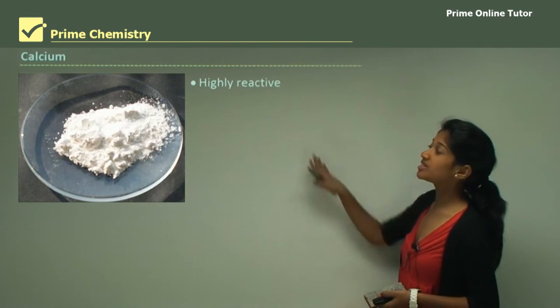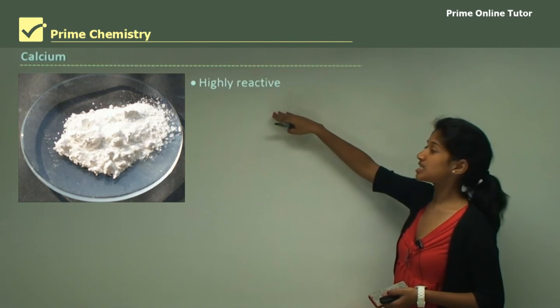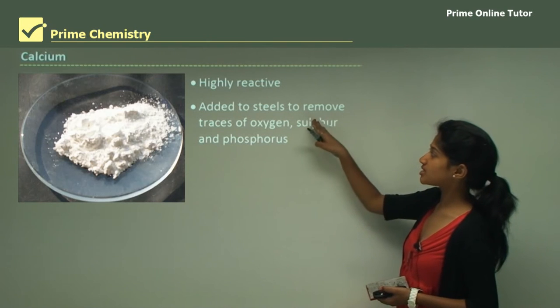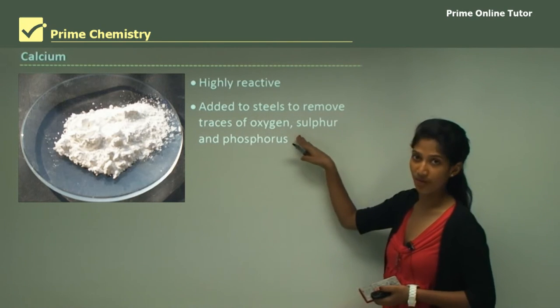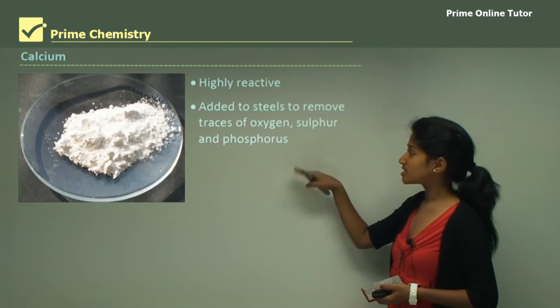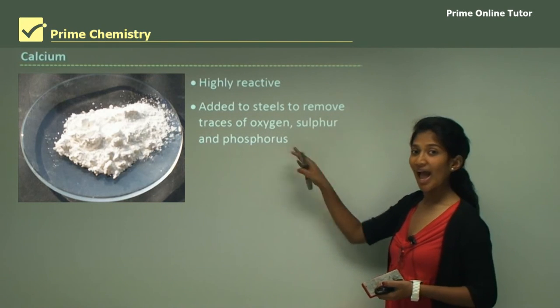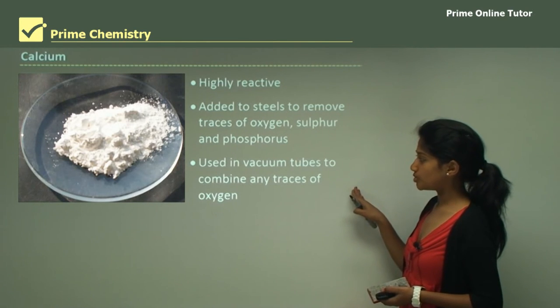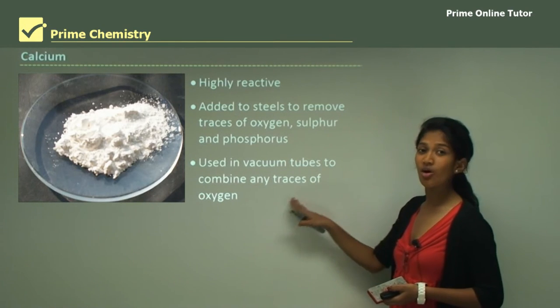Calcium is highly reactive. It's in the second group. It's usually added to steels to remove traces of oxygen, sulfur and phosphorus because the calcium would react with all of them and remove them. It's used in vacuum tubes to combine any traces of oxygen.